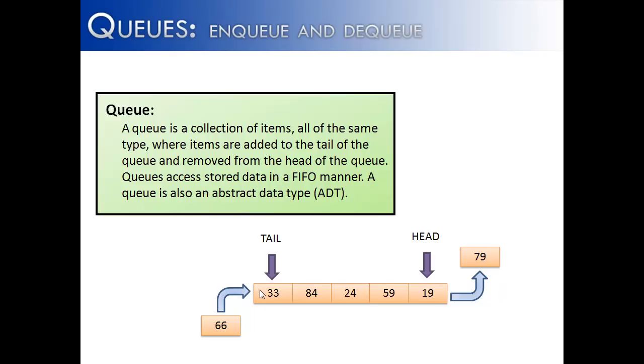Queues access stored data in a FIFO manner. That means first in, first out. And a queue is also an abstract data type, just meaning the way queues work are going to be the same in Java, C++, C, Python, etc.